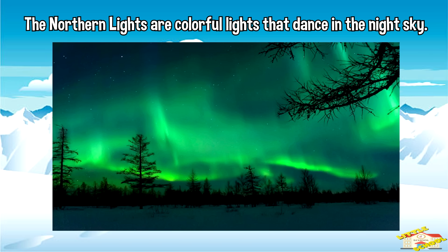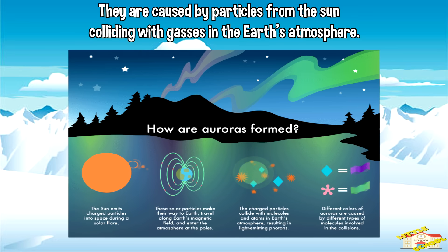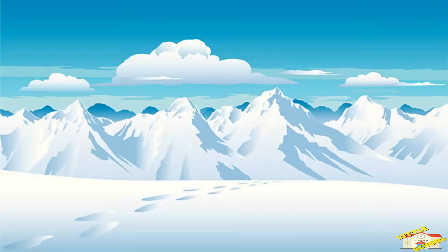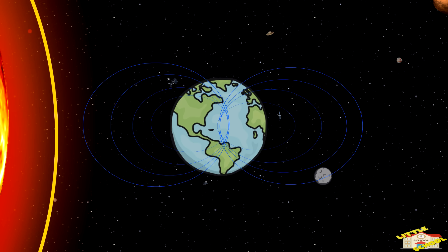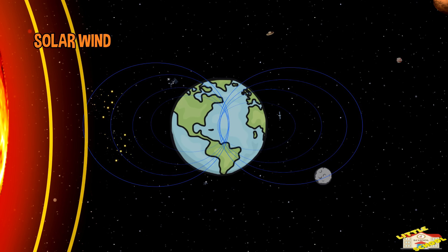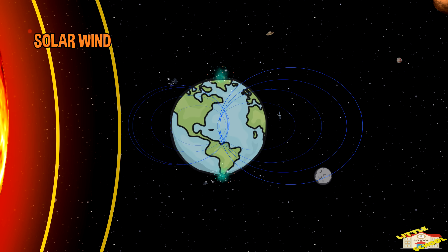that dance in the night sky. They are caused by particles from the Sun colliding with gases in the Earth's atmosphere. These particles are carried by the solar wind, which is a stream of electrically charged particles that come from the Sun.